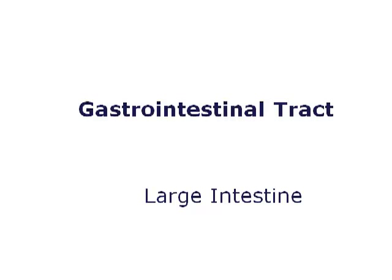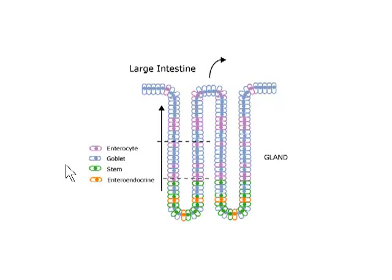Finally, let's take a look at the large intestine, the last part of the gastrointestinal tract. When we look schematically at the large intestine, what we find in regard to the arrangement of the epithelium is as follows. There are no villi extending outward from the surface of the epithelium. In fact, the epithelium is composed solely of the surface and these downward folding intestinal glands.